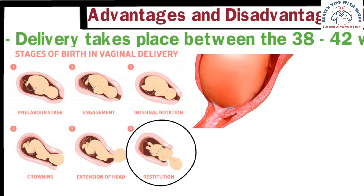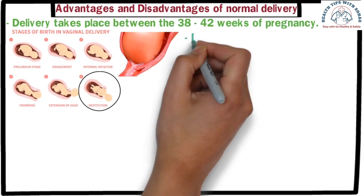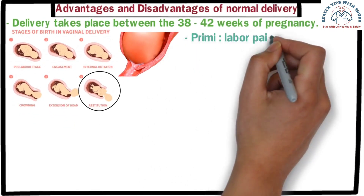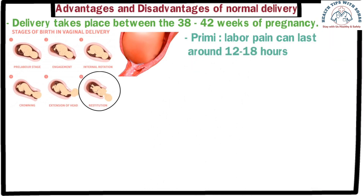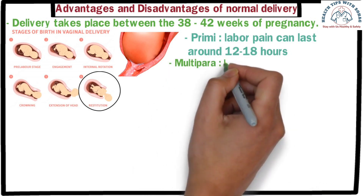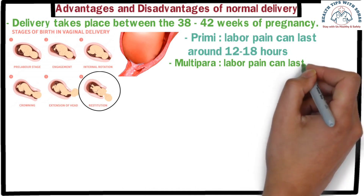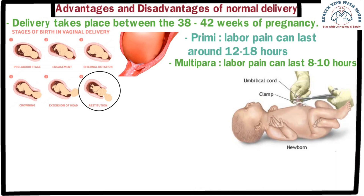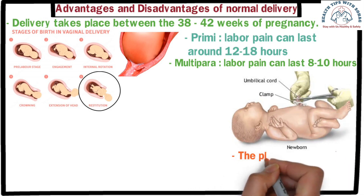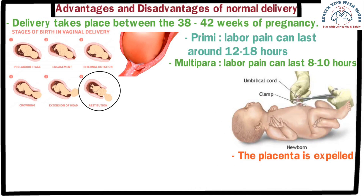From the onset of labor pain until the birth of the baby, a significant amount of time is required. For those giving birth for the first time, this can last around 12 to 18 hours, while for those having a second or third baby it could be around 8 to 10 hours. After the baby is born, the umbilical cord connection to the placenta is cut and the placenta is gradually expelled. That is an overview of the normal delivery process.